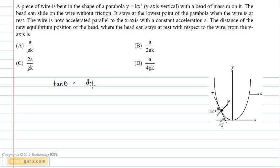The equation of parabola is given as y is equal to kx square. Therefore, dy by dx is equal to 2kx which is equal to tan theta.